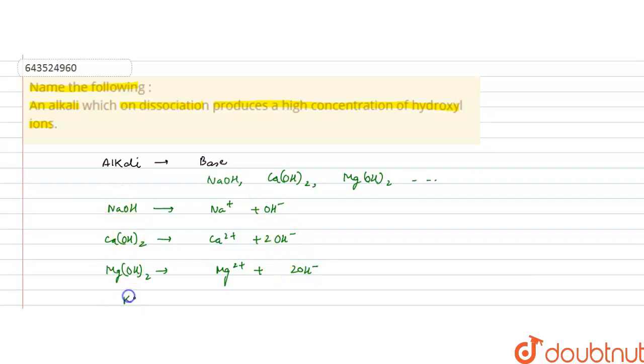KOH, potassium hydroxide also dissociates into K positive and OH minus.